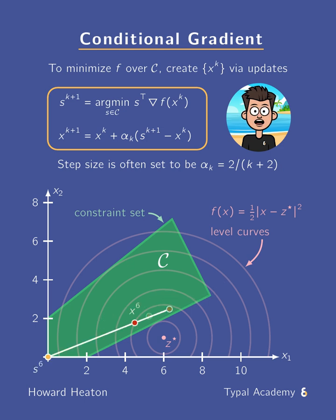The second step is to compute x^(k+1) as an average of x^k and s^(k+1), typically with weighting alpha_k given by 2/(k+2), so that the step sizes decay to zero.